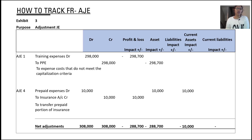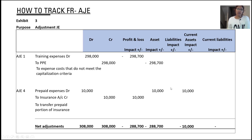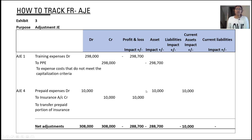For example, the second adjustment was prepaid expenses that were debited to the insurance account, so it's a rectification entry — you're debiting the prepaid expense and crediting the insurance account. This is going to impact your P&L, total assets, and current assets as well.